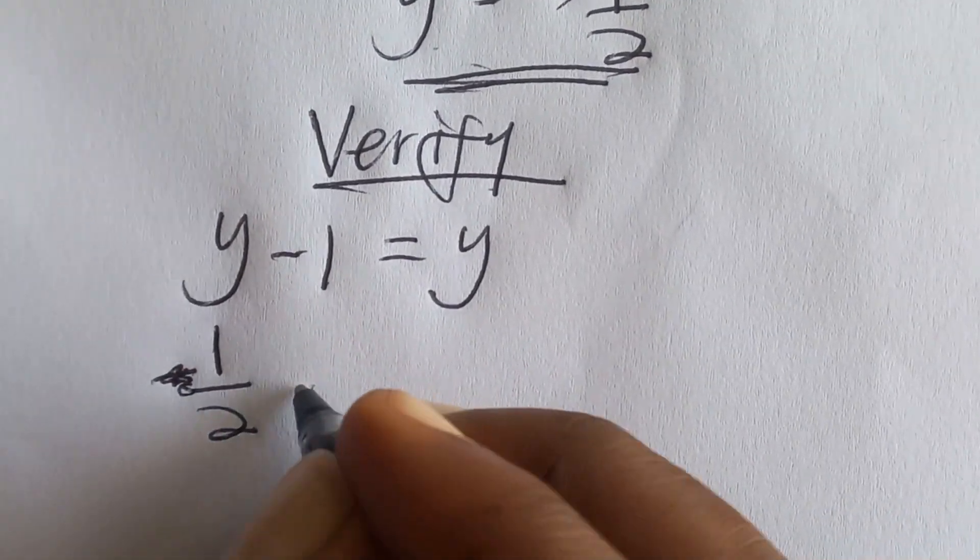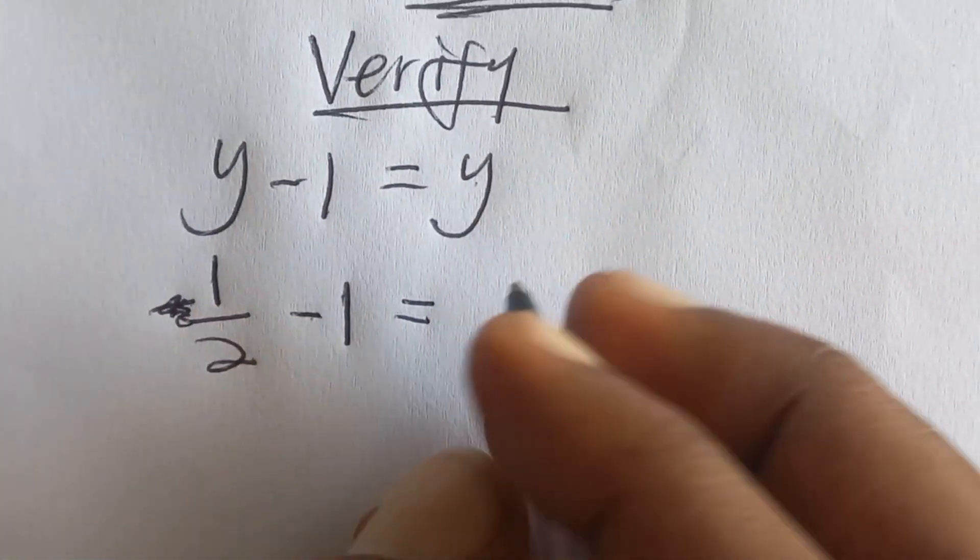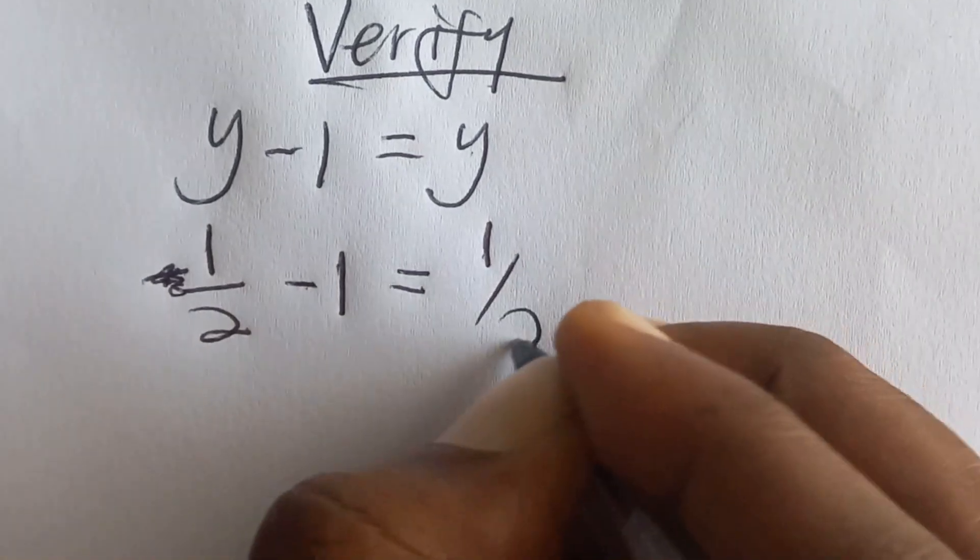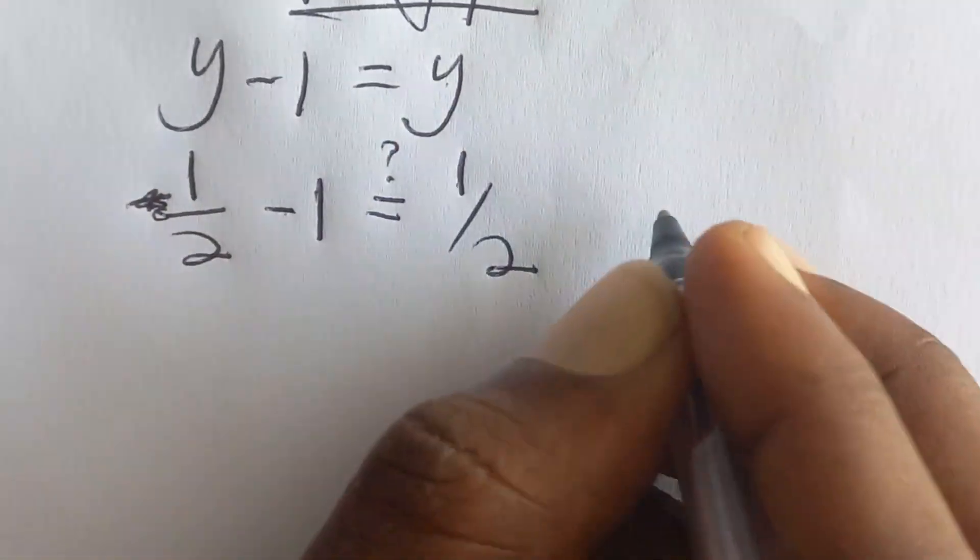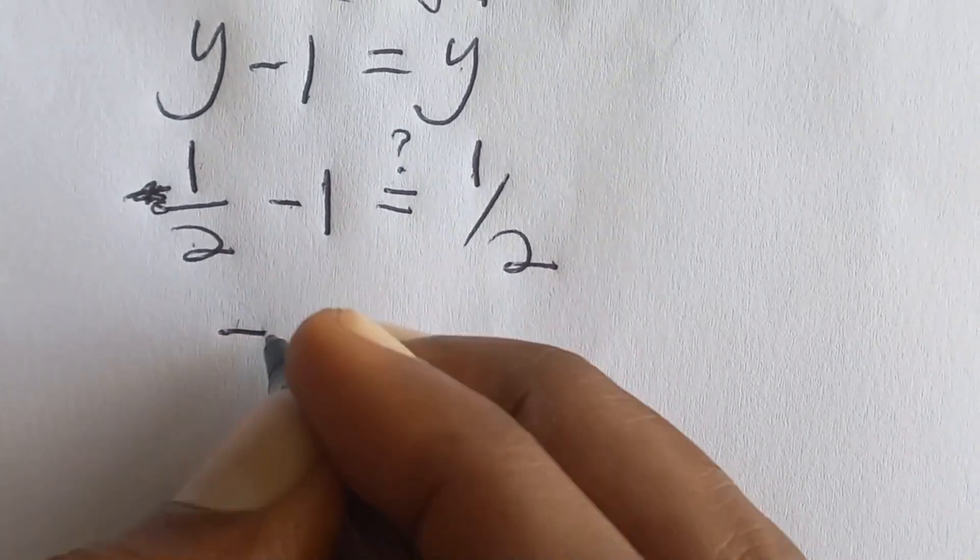So one on two minus one is equal to, we have half. So one half is equal to this. Now half minus one, we are going to get negative half.